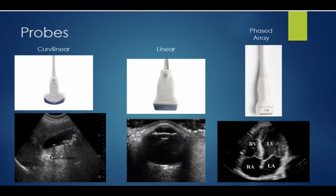There are a number of different ultrasound probes; here are three of the most commonly used. The curvilinear probe is used to image deep structures, often within the abdomen. The probe uses sound waves of a lower frequency, which will travel further and penetrate deeper within the abdominal structures. However, this sacrifices some resolution of the image. Here we can see that the curvilinear abdominal probe is used to look at a gallbladder, and we can even visualize small stones within the gallbladder.